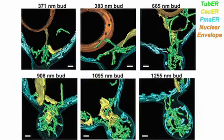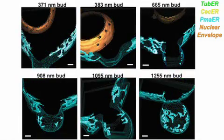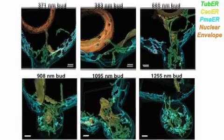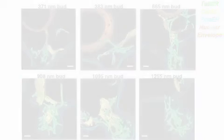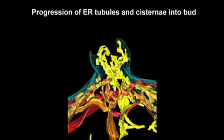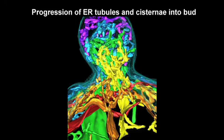Cytoplasmic tubules also pointed toward the bud, suggesting these domains might provide ER membranes to the growing daughter cell. As we reconstructed a progression of different budding cells lined up according to bud size, we noticed that the bud neck was completely devoid of any plasma membrane-associated ER. Instead, it was a large cytoplasmic domain of both cisternae and tubules entering into the bud through the middle of the bud neck, spreading out and recontacting the plasma membrane in multiple directions, reforming the plasma membrane-associated ER in the bud.